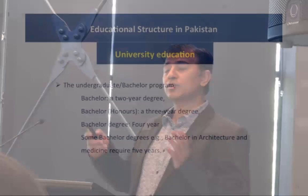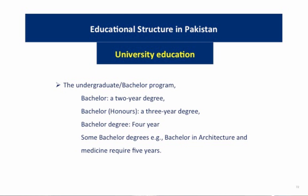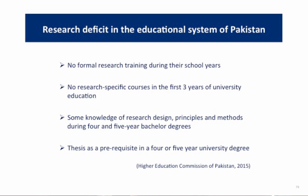We have four different types of bachelor's degrees: two years, which takes place in colleges affiliated with universities; three years; four years; and some bachelor's degrees like architecture and medicine are for five years. Interestingly, in schools, students are not introduced to any research-specific subject or course until the third year of university. Some knowledge of research design principles and methods is given in the four-year bachelor's degree, where students are expected to present their thesis at the end.